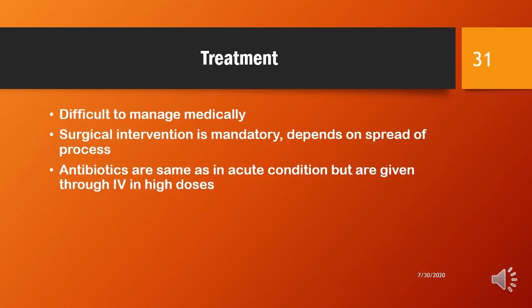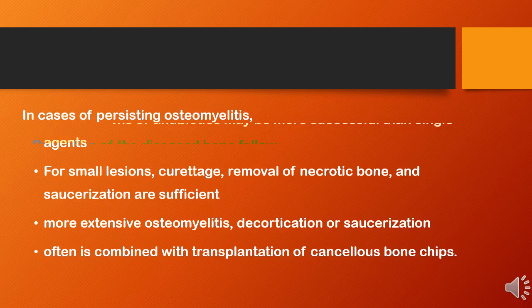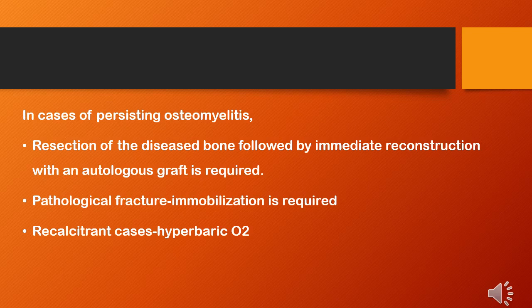Coming to the treatment, it is difficult to manage medically, and surgical intervention is mandatory depending on the spread of the process. Antibiotics are the same as in the acute condition but are given intravenously in high doses. Combination of antibiotics may be more successful than use of single agents. For small lesions, curettage, removal of necrotic bone, and saucerization are sufficient. For more extensive cases, decortication and saucerization should be done, often combined with transplantation of cancellous bone chips. In persisting osteomyelitis, resection of the diseased bone followed by immediate reconstruction with autologous graft is performed, and pathological fractures should be immobilized. Recalcitrant cases are treated with hyperbaric oxygen therapy.